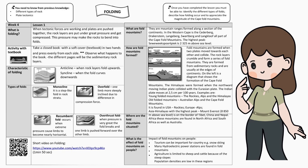What are fold mountains? They are mountain ranges formed along a section of the continents. In the Western Cape, the Cedarberg, Drakenstein, Langeberg, Swartberg, and Langkloof are all part of the Cape Fold Mountains. The highest peak is 2,325 meters above sea level.